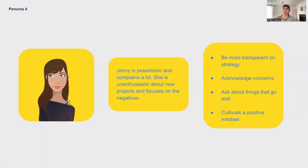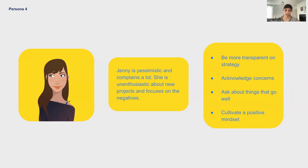Our last persona is Jenny. Jenny is pessimistic and complains a lot. She is unenthusiastic about new projects and focuses on the negatives. Negativity can be contagious — this could affect the mood of the entire team. And it's hard to get negative people's buy-in. It seems like they always find a reason to disagree and they tend to prefer the status quo over trying new things. But in this case, it makes sense to first try to understand why she's feeling this way. Because sometimes, due to past experiences with failed projects or things not going as expected, people might have this emotional baggage — a disbelief.